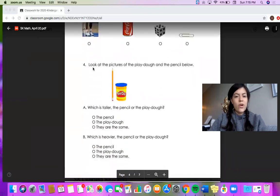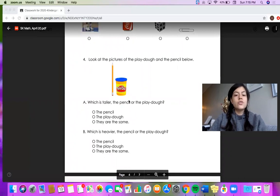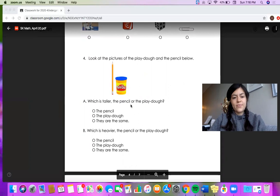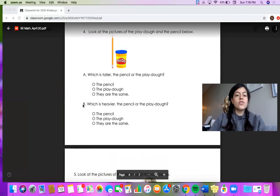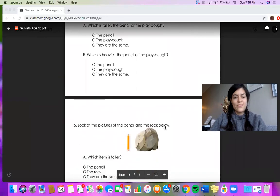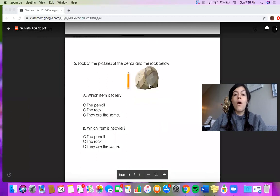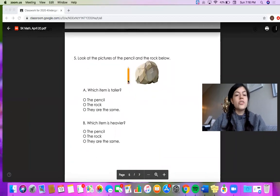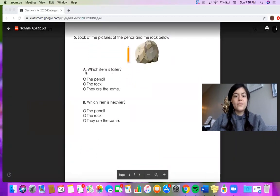For number four look at the pictures of the play-doh and the pencil and you'll have to answer two questions. Which is taller, the pencil or the play-doh? And for B you'll answer which is heavier, the pencil or the play-doh? For number five you're comparing a rock and a pencil. You have to answer two questions for this as well: A, which item is taller, and B, which item is heavier.